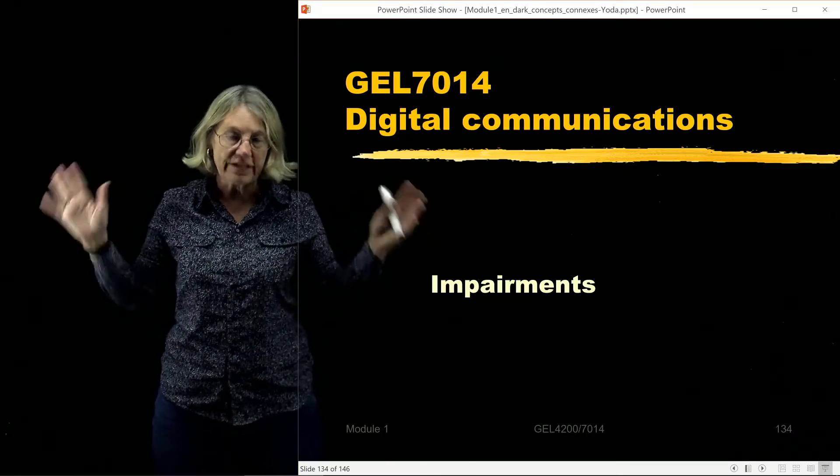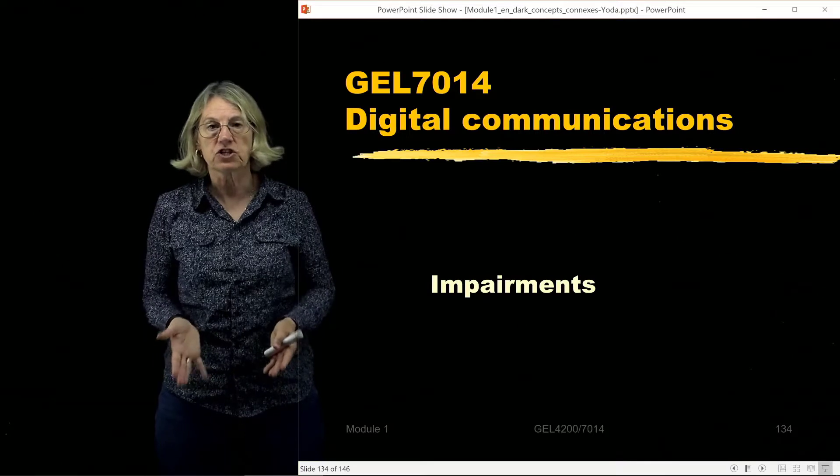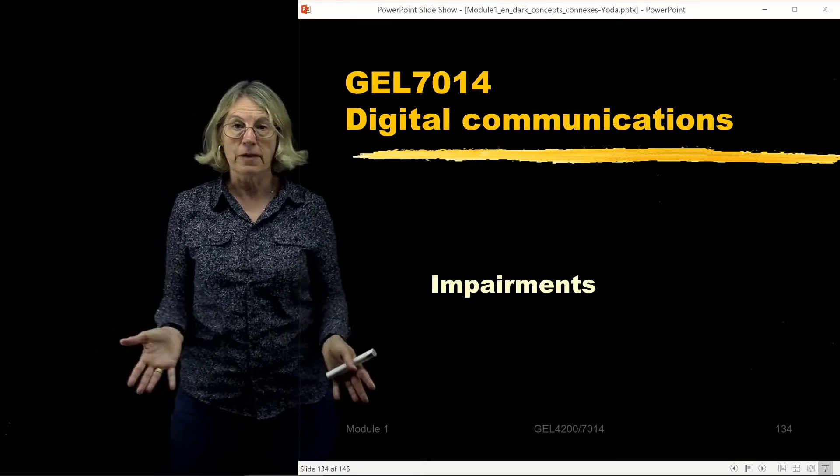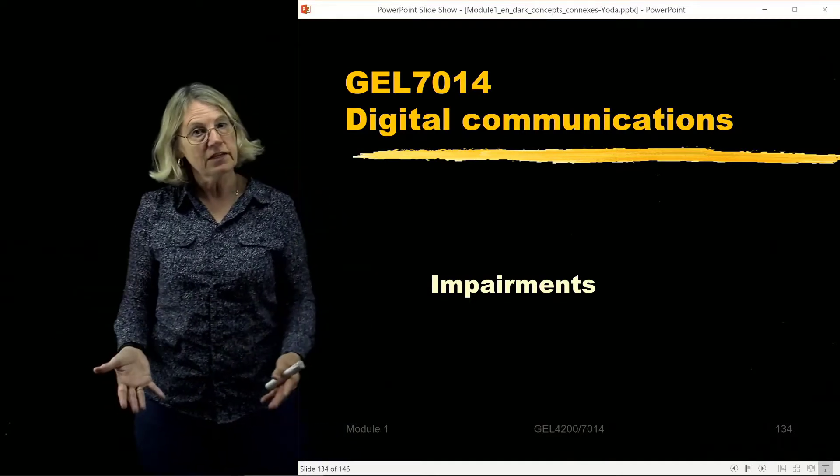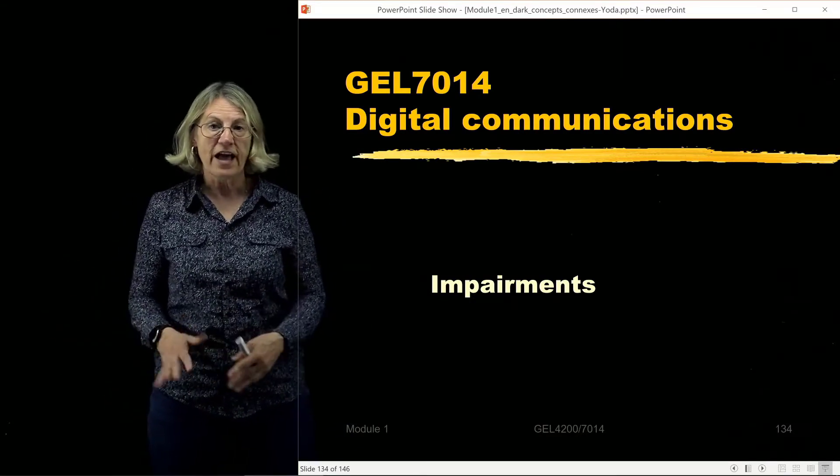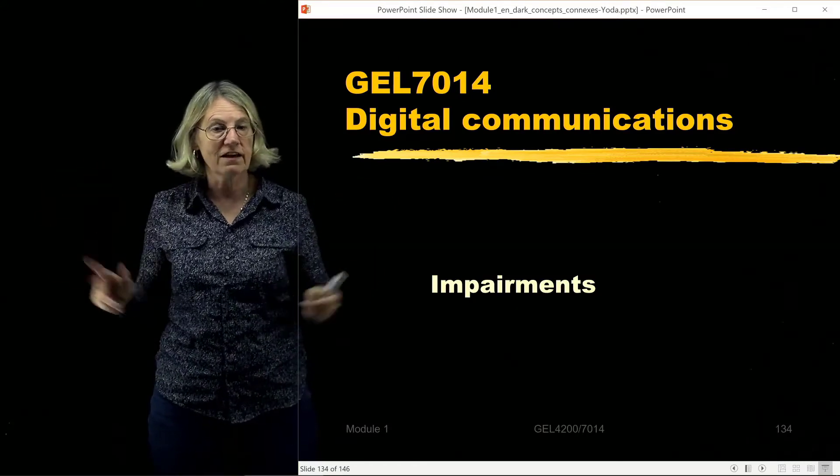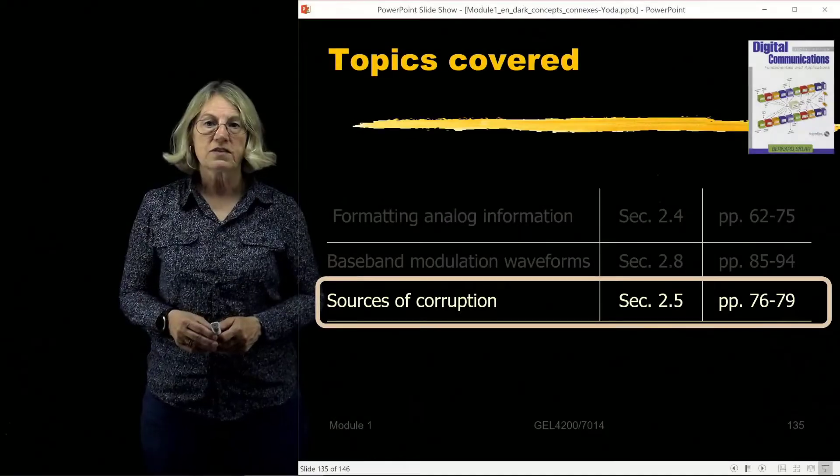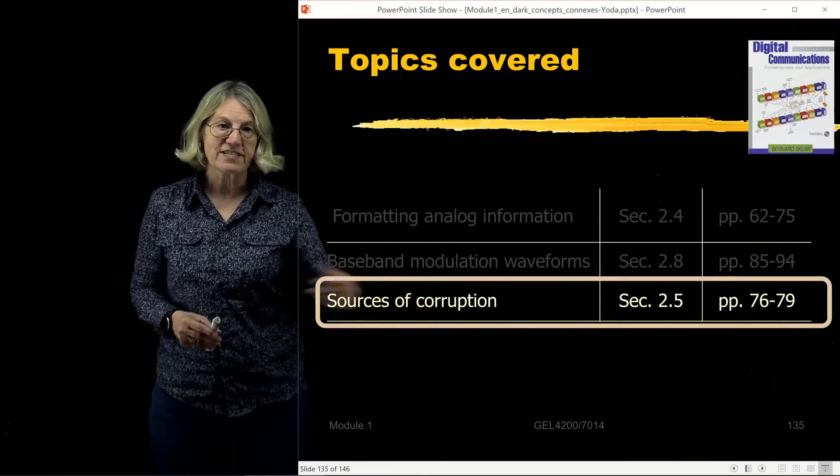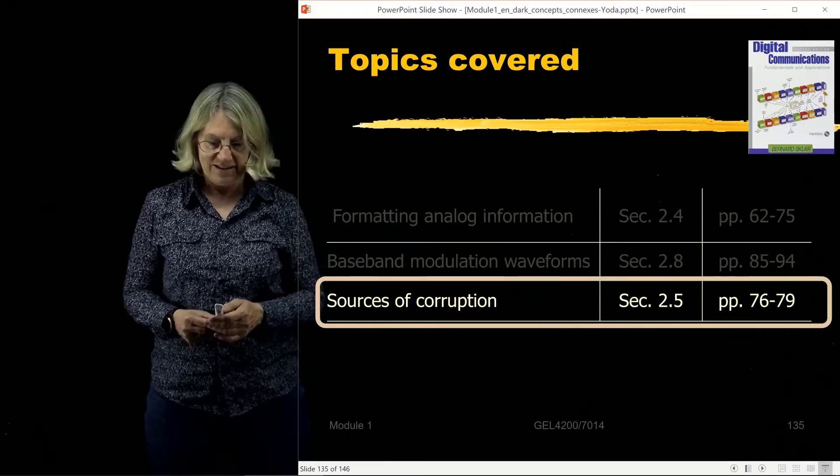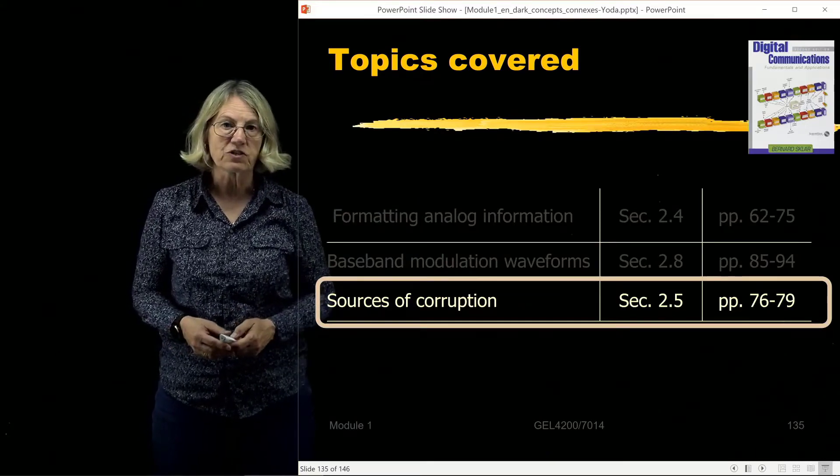In this introduction to digital communications, I'd like to talk pretty broadly about impairments, some of which we'll be diving into in great depth in this class, others which we will not address, and to try and give you some context. This topic is covered in Section 2.5 of our Sklar textbook, sources of corruption to the signals that we're transmitting.